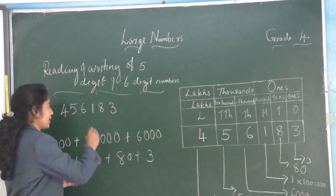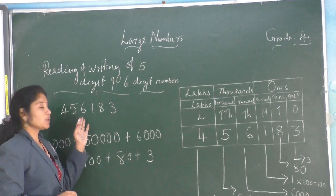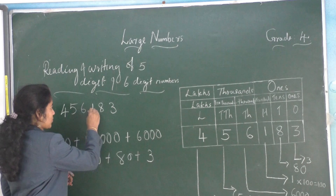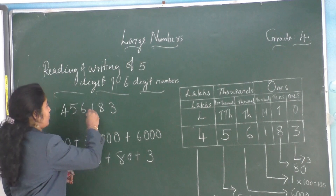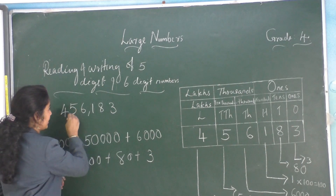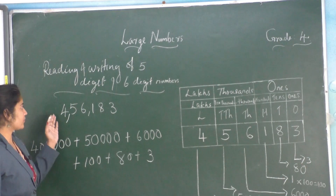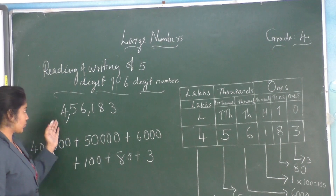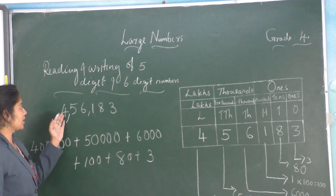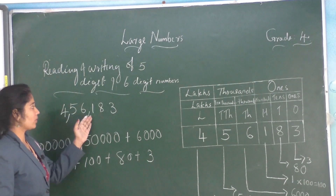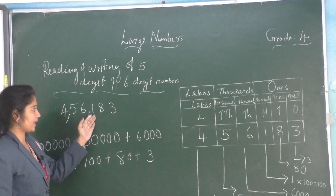The expanded form of this number is: 4 lakh + 50,000 + 6,000 + 100 + 80 + 3. While writing a six digit number, put a comma to separate the periods — ones, then thousands, then lakhs. We read from the highest place, so this number is read as 4 lakh 56,183.